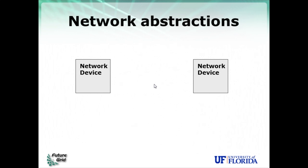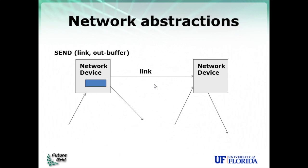Looking at how networks work, differently from a computer, you have multiple devices connected, and these network devices have links attaching them to each other. The basic abstractions are the sending of a message: a sender will name a link that they want to send a message out on — a device may be connected to multiple links — and you have to specify which link the message goes to, and then specify a buffer with data to be transferred over that link.